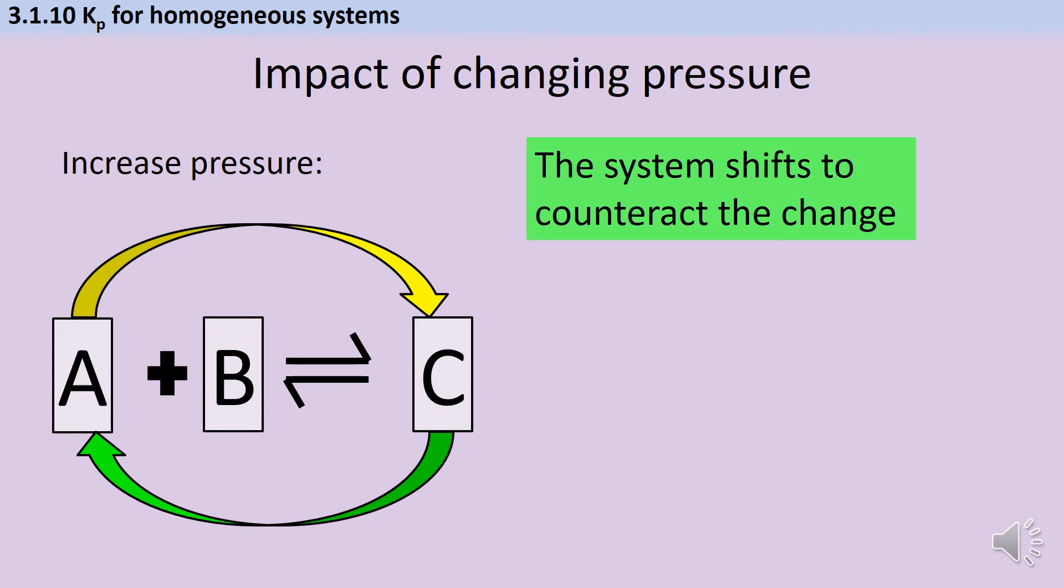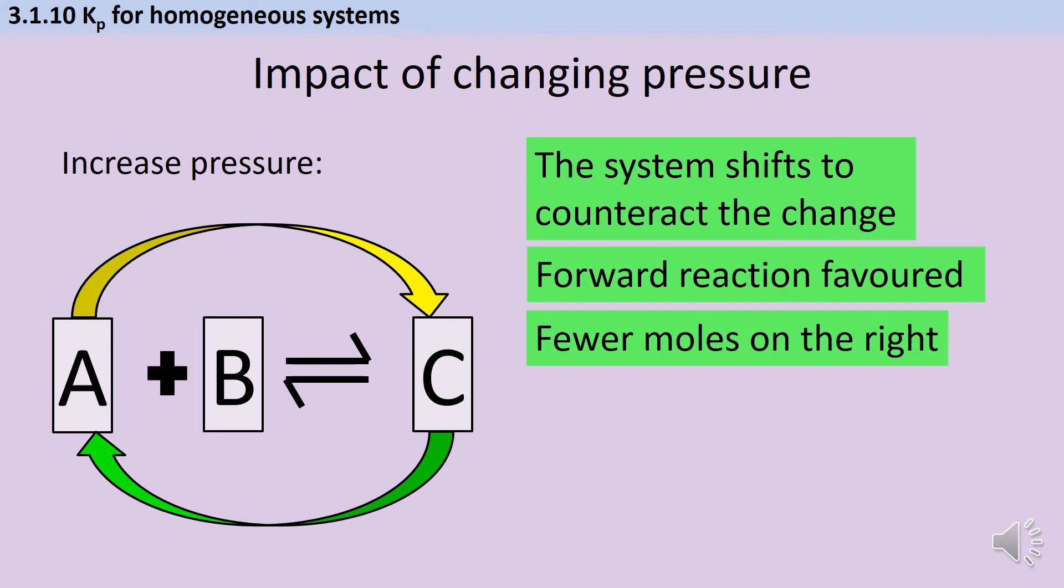And the only way that can happen is by favouring either the forward reaction or the reverse reaction. In this instance, it's going to be the forward reaction that's favoured. And the reason for that is that the right hand side of the equation has fewer moles of gas than the left hand side of the equation. Therefore, the position of equilibrium will shift to the right and we'll have more of product C being made.